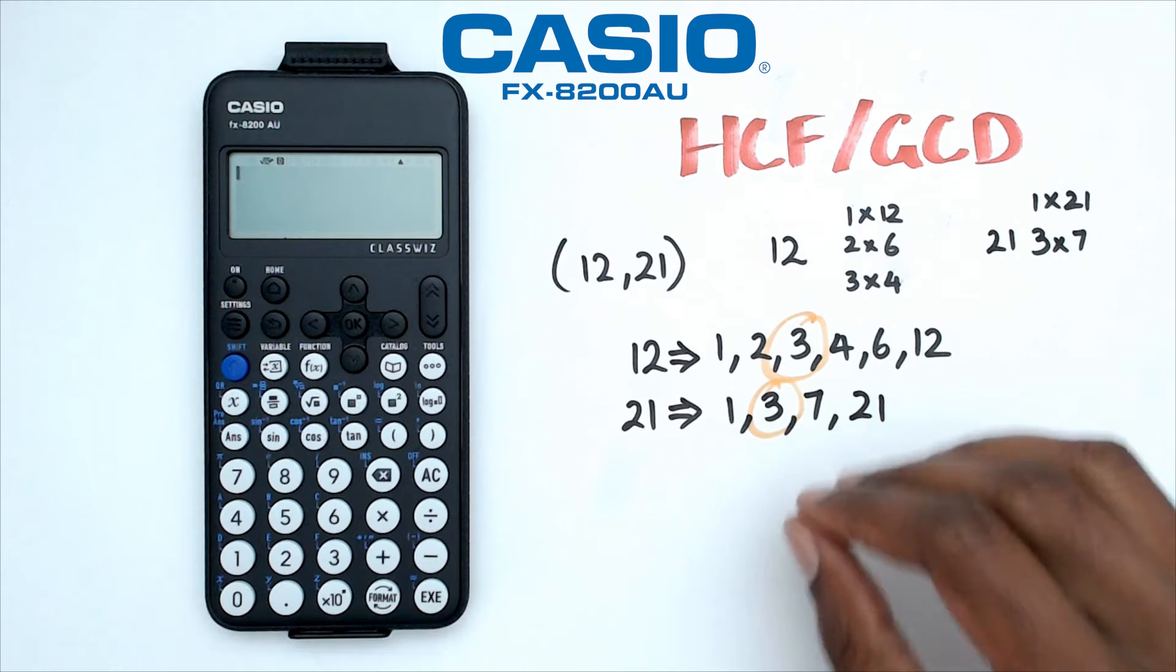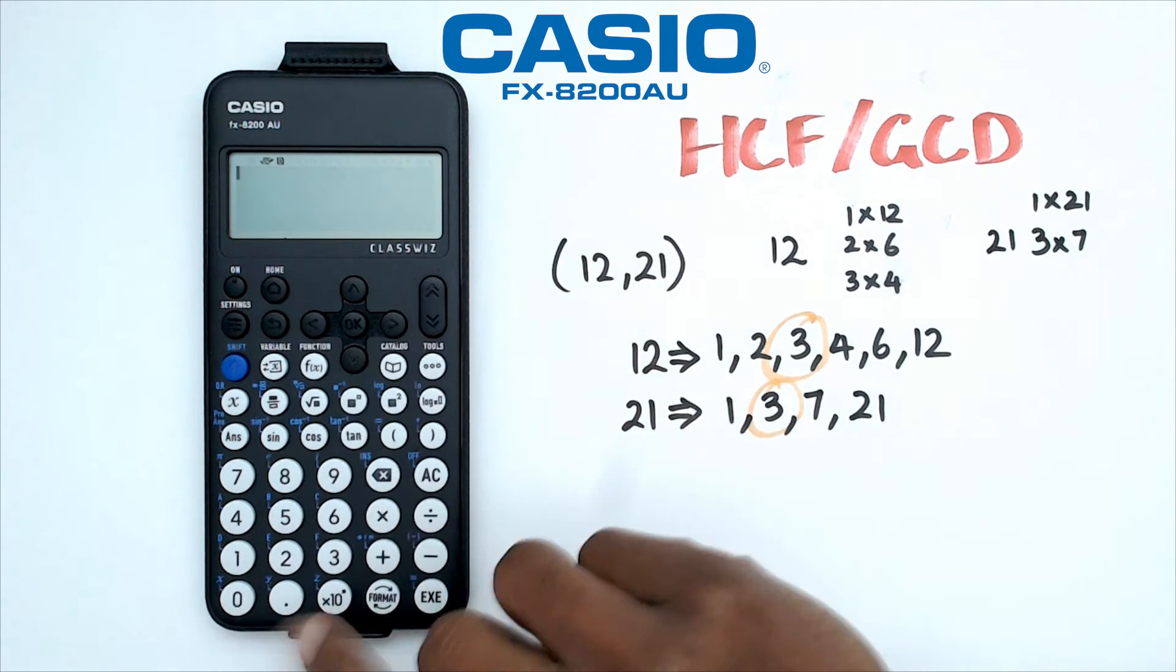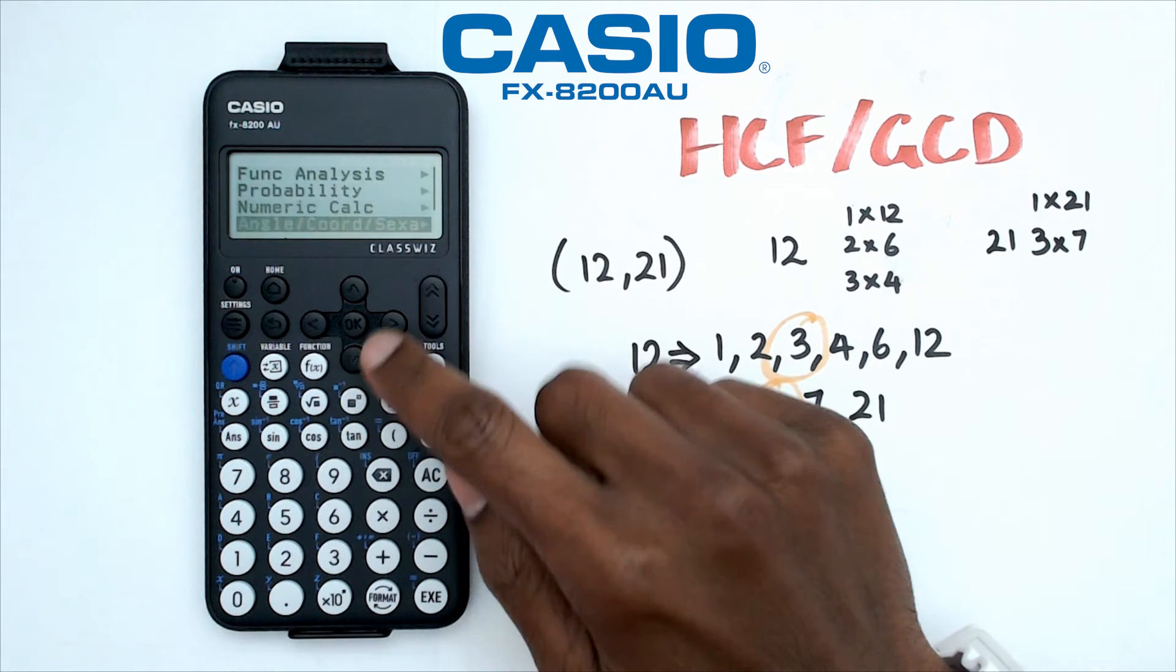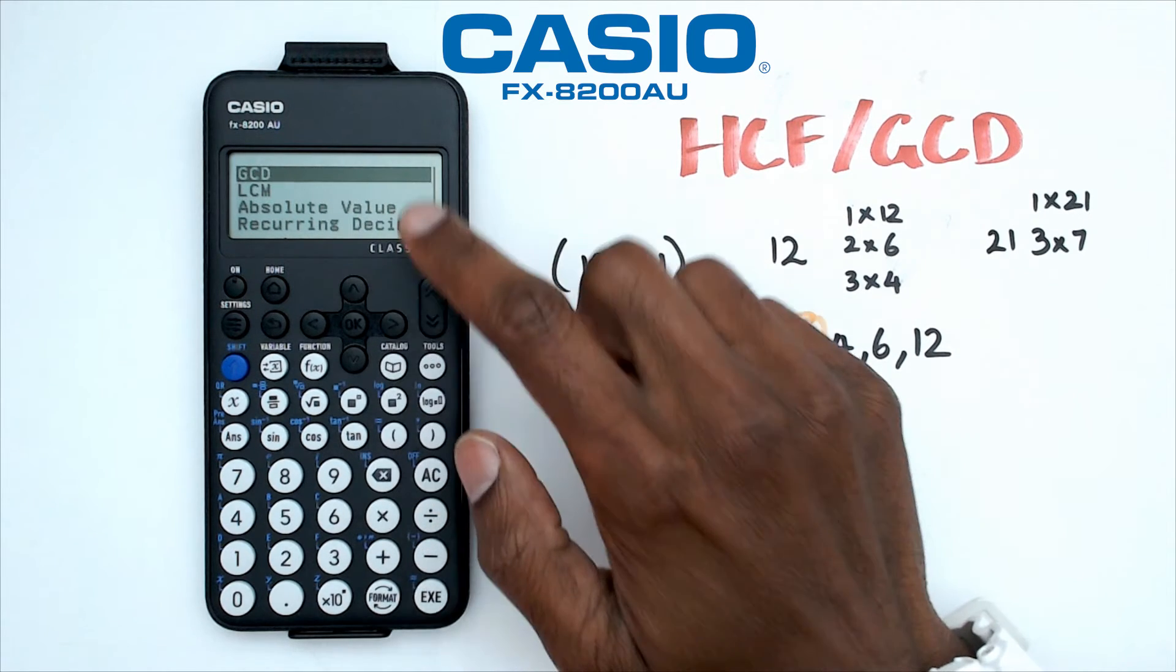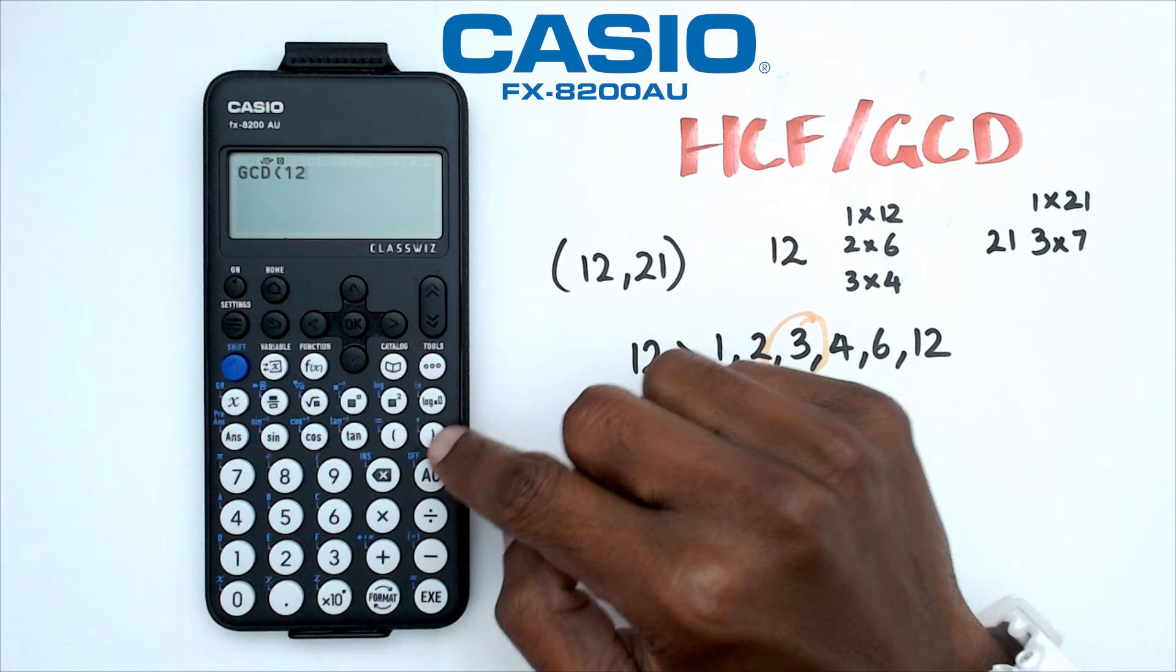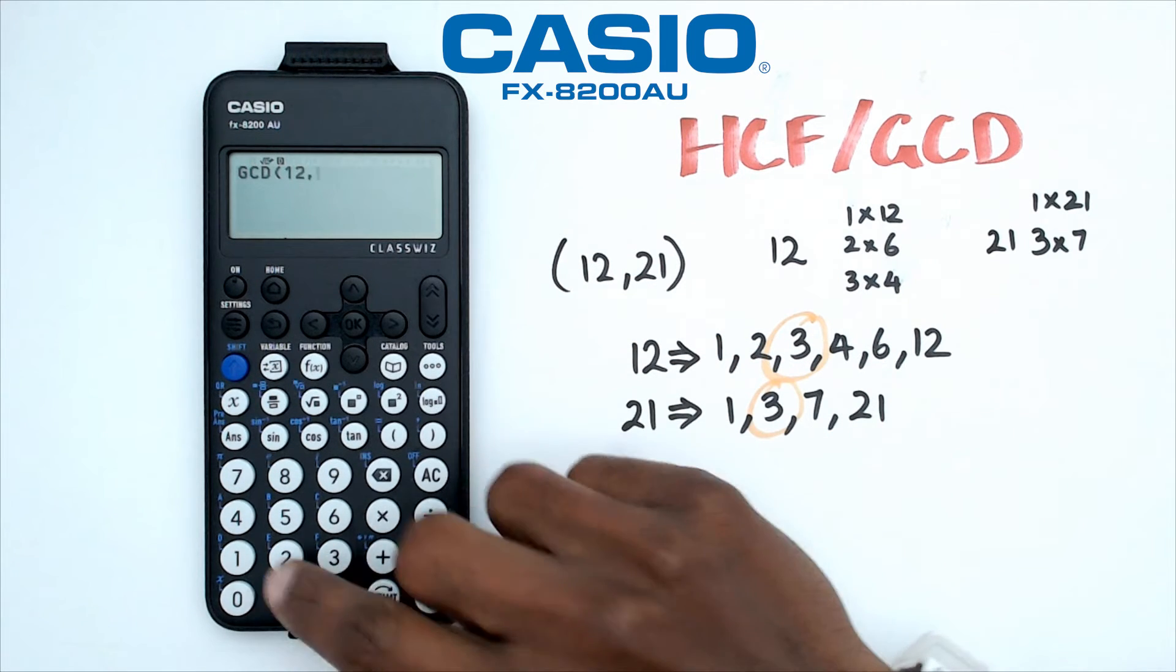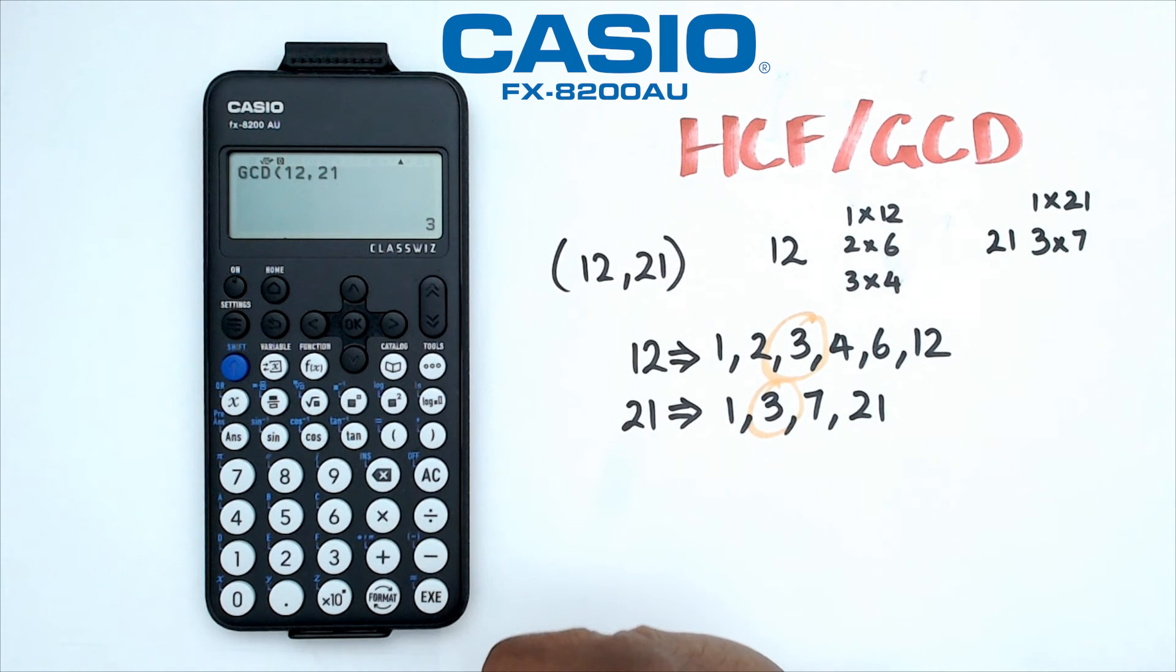So how do we do this in the calculator? What we're going to do is we're going to click on home, go into the calculate mode, and we are going to go into the catalog and go down to numeric calculation. Now what you need to do is click on the GCD function there. So here we're just going to put in 12 and we've got to put a comma, which is just shift right bracket. So we're going to go shift right bracket. We're going to put in 21. And we're going to press equals or exe and we're getting the 3 right there.